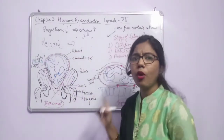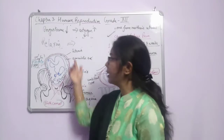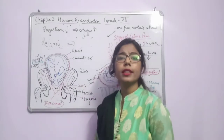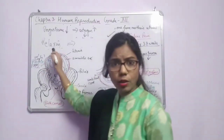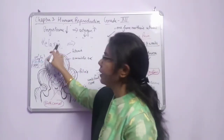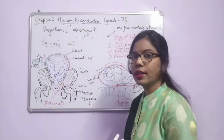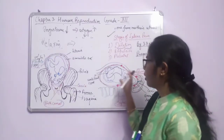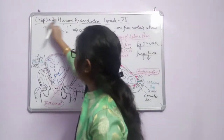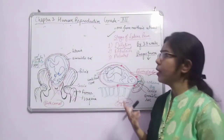Relaxin is secreted by the placenta and plays a role in widening the pelvic bone and proper dilation of the cervix. So in summary, the first stage of dilation involves two key hormones — oxytocin (for uterine contraction) and relaxin (for cervical relaxation and pelvic widening).